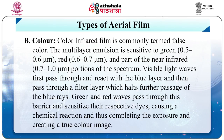Natural color, also known as true color film — the multi-layer emulsion is sensitive to the visible region of the electromagnetic spectrum. There are three layers of gelatin containing sensitized dyes, one each for blue, green, and red light. Green and red layers are also sensitive to blue wavelengths. Visible light waves first pass through and react with the blue layer and then pass through a filter layer which halts further passage of the blue rays. Green and red waves pass through this barrier and sensitize their respective dyes, causing a chemical reaction and thus completing the exposure and creating a true color image.